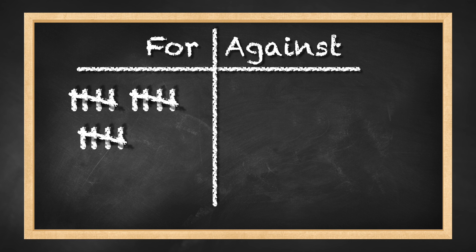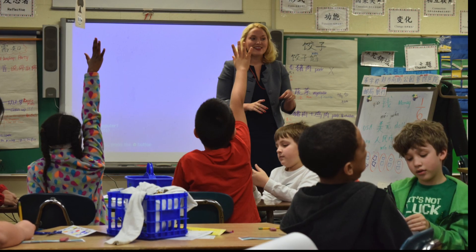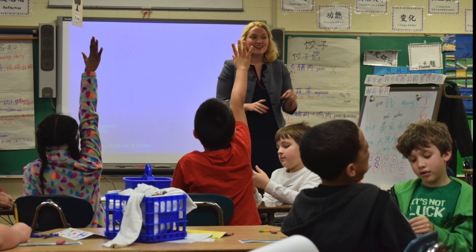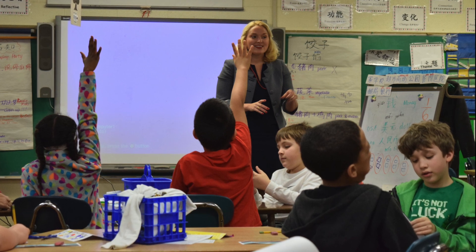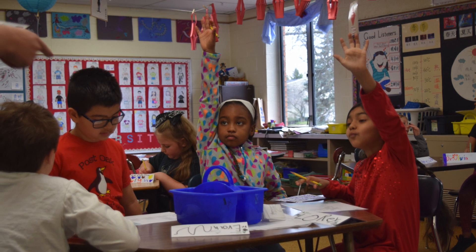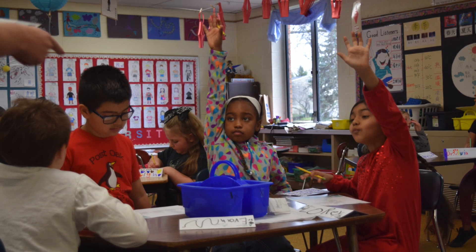As they move to either side, tally the number of students for or against the loan on the chart and ask one or two students to explain the reason for their decision. Limit this activity to no more than five or six minutes. If the teacher prefers not to have students move around, then have them raise their hands to indicate if they are for or against. Conclude the activity by asking students to identify five qualities of a trustworthy borrower and accept all reasonable answers.